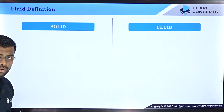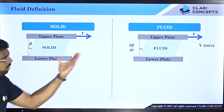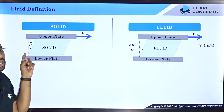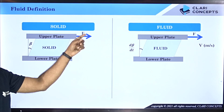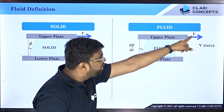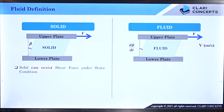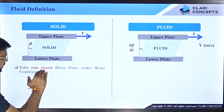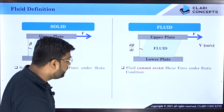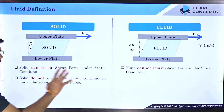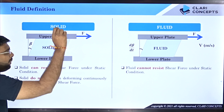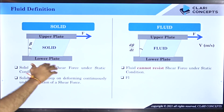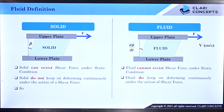To summarize the difference between solid and fluid: in solid, the value of force is in line with the deformation angle beta — how much deformation occurs depends on the force value. In fluid, how much the rate of deformation is depends on the force value. So solids can resist shear force under static conditions — when force is applied the solid stays steady at a particular angle — but fluid cannot resist shear force in static condition. Solids do not keep on deforming continuously; they deform to a particular angle and stay fixed.